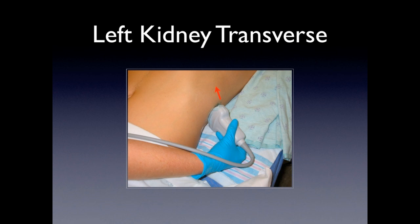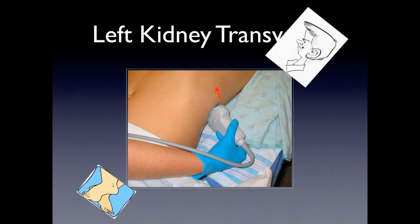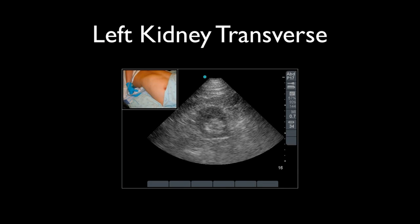For the left kidney transverse view, the indicator is going to be pointing upward. Head is on one side, feet on the other, and you should be able to visualize the structures. We'll quickly review the kidney, spine, and anatomical orientation.